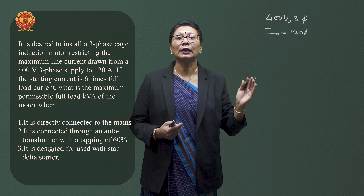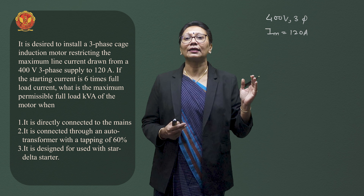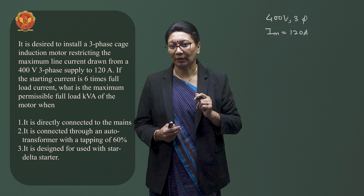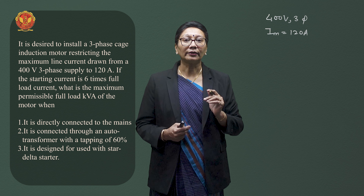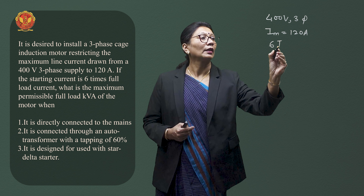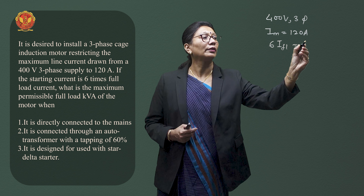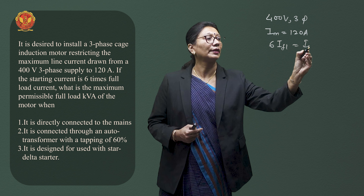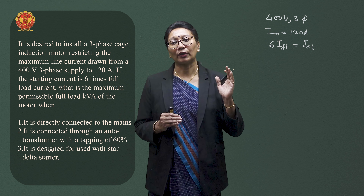This motor must not exceed 120A. The starting current is 6 times the full load current. So the motor we have to design should draw no more than 120A, and the starting current will be 6 times the full load current.